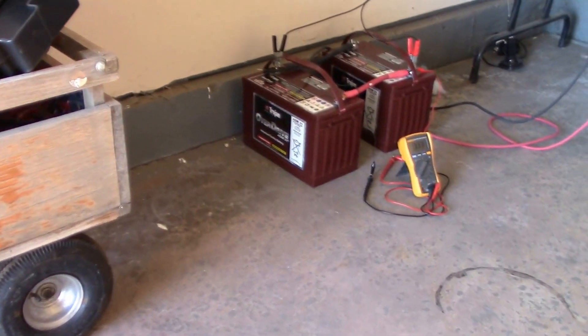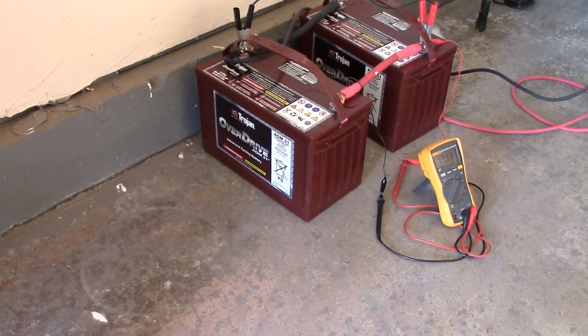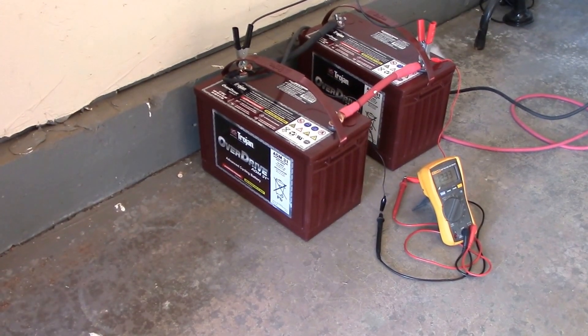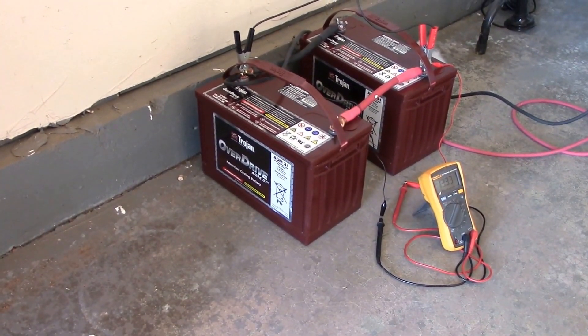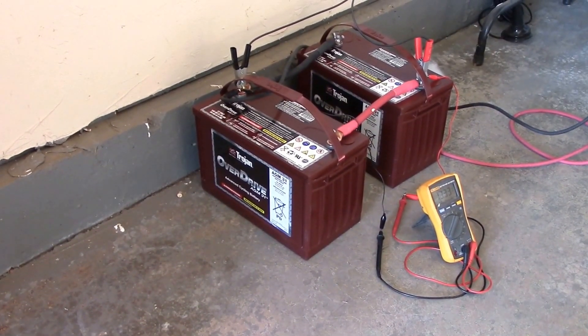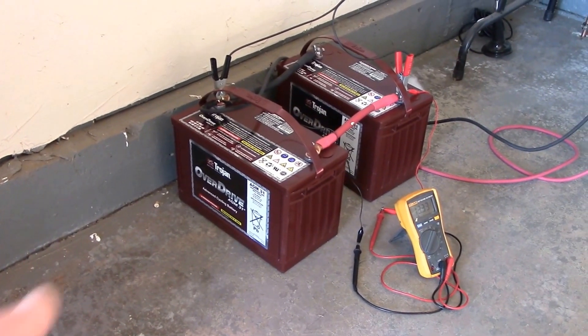One thing I did is I went down to Continental Battery here in town and picked up two Trojan Overdrive AGM size 31 batteries. Got a really good deal on these 12-volt batteries.